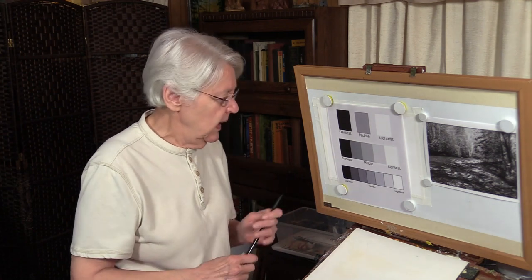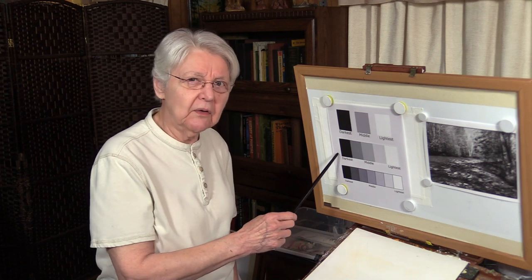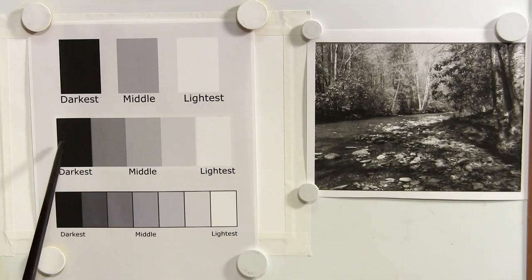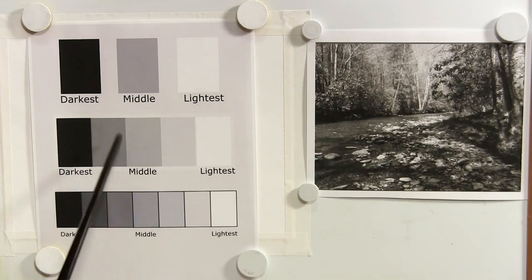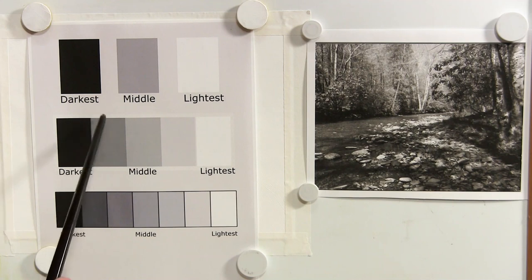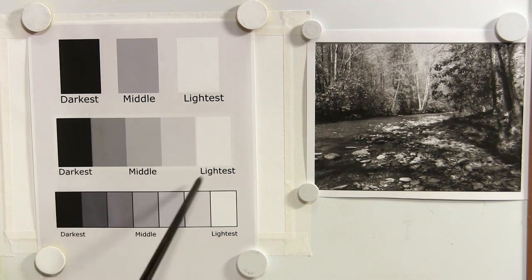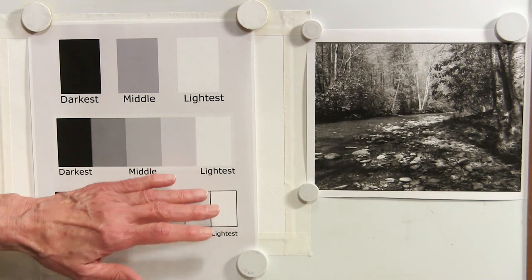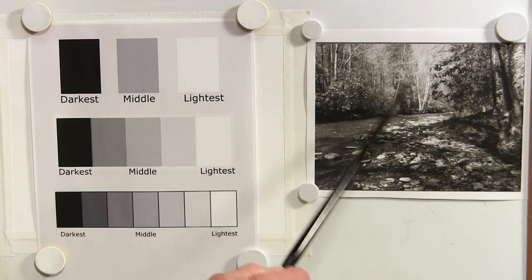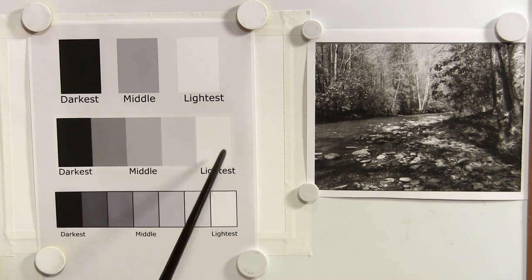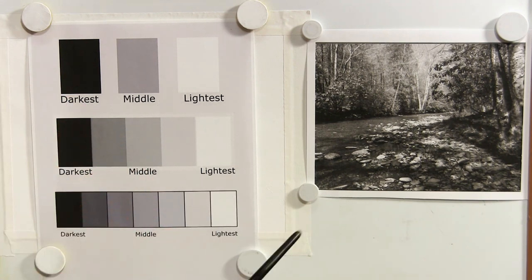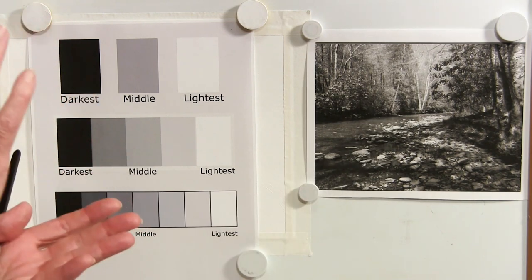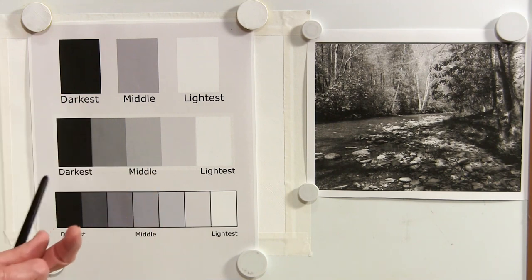But then that got subdivided, and here is the five-value scale. In the five-value scale we get a value that's in between the middle and the darkest, and another one in between the middle and the lightest. We could actually divide a scene into five value areas — pretty close to five values — and still be able to do a painting in which we correctly interpret the light and shadow areas of the scene.